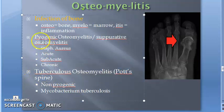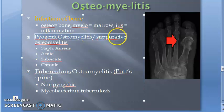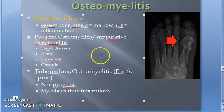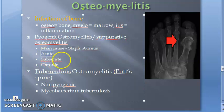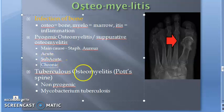Pyogenic osteomyelitis, or suppurative osteomyelitis — the main cause is Staph aureus. Other causes exist, which we'll come to. It can be acute, subacute, or chronic. So if they ask you acute pyogenic osteomyelitis, subacute pyogenic osteomyelitis, or chronic pyogenic osteomyelitis, you'll have to explain each in the exam.